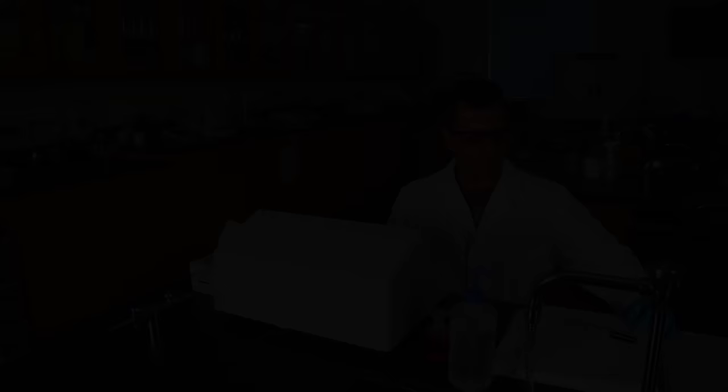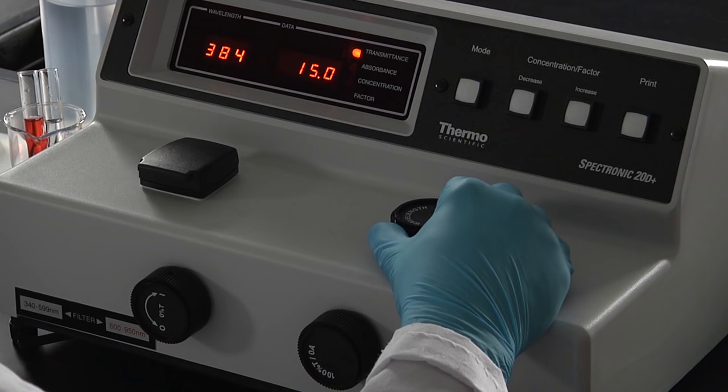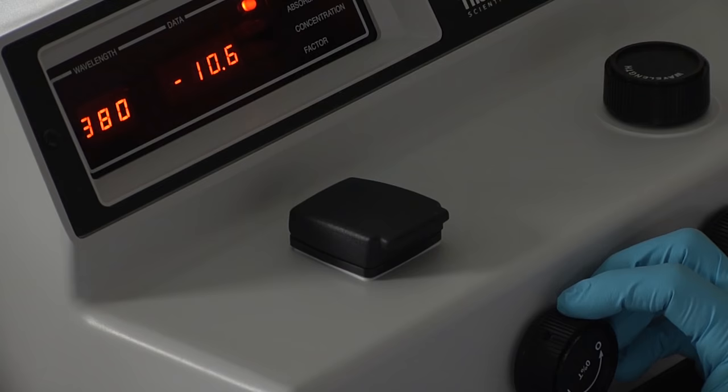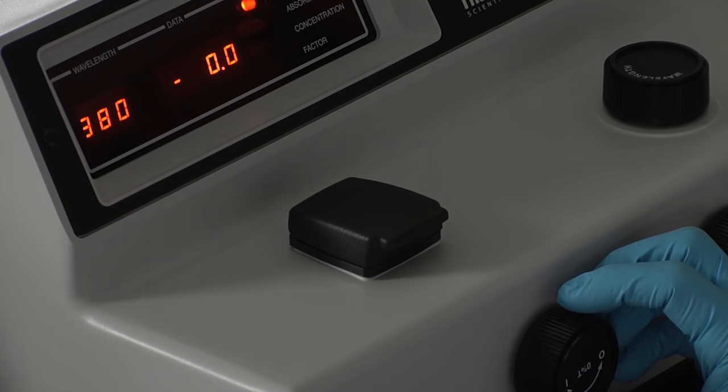Let's practice by performing a simple experiment. In this exercise we'll determine the absorbance spectrum of red food coloring. To begin, set the wavelength to 380 nanometers. With the sample chamber empty and the lid closed, set the display to 0% transmittance by using the zero control knob.